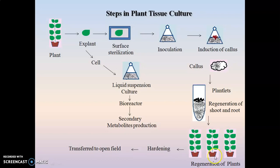The regenerated plantlets are not taken directly into the natural environment as they are very delicate. They need to be habituated first — placed in an artificial environment where soil containing minerals and nutrients is provided for their growth. This step is known as hardening of the plantlets. Once sufficiently strong, the plantlets can face external environmental conditions and are then transferred into open fields or greenhouses.